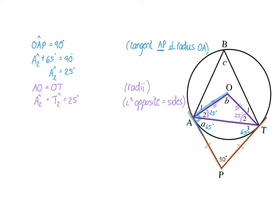We can now calculate angle B: 180° minus the other two angles in that triangle, both 25°. By the interior angles of a triangle, angle B equals 130°.